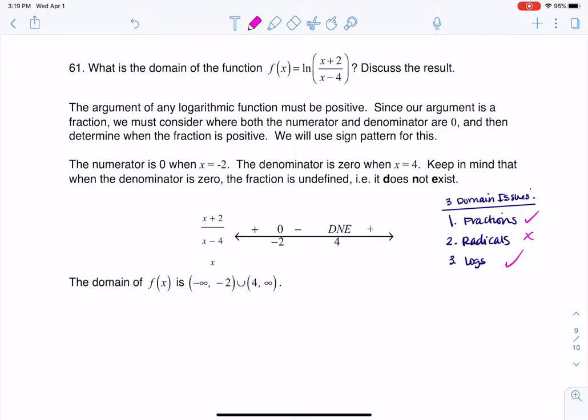In terms of the fraction, I have to worry about where the denominator is zero. For the fraction aspect, if I set x minus 4 to 0, I'm going to get x equaling 4. So I have to remember to kick out x equaling 4 from my domain.